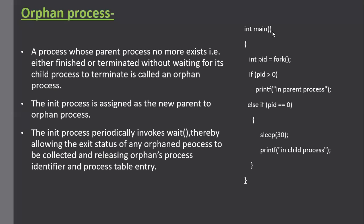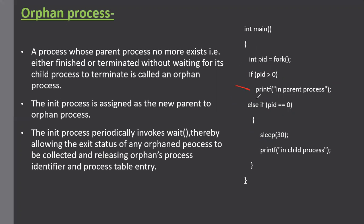Looking at a code example: in the main function, we use the fork system call, which returns a value greater than zero when the parent is running, and returns zero when the child is executing. If PID is greater than zero, the parent is executing and prints its message. If PID is zero, the child is executing and sleeps for 30 seconds. The parent finishes its execution after printing and terminates, while the child is still sleeping. Since the parent terminates without waiting for the child, this child process becomes an orphan process.